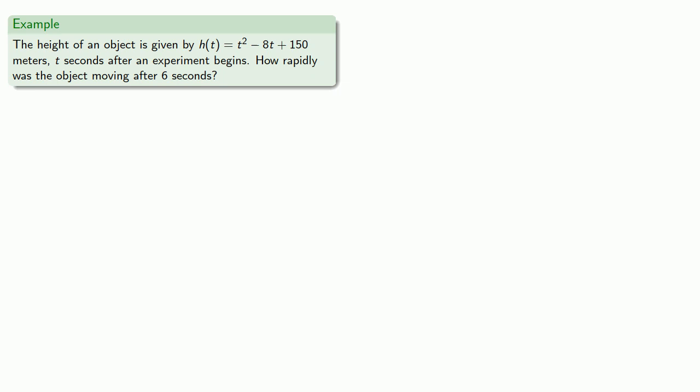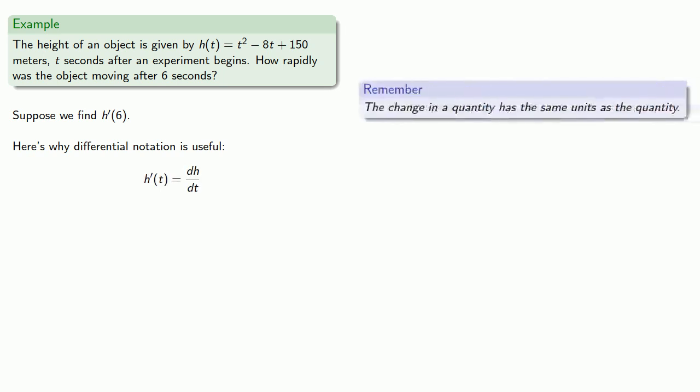Well this is calculus and we don't have too many other things we can do, so what if we find the derivative at 6? Here's where differential notation is useful. This h'(t), well that's dh/dt, and remember the change in a quantity has the same units as the quantity.